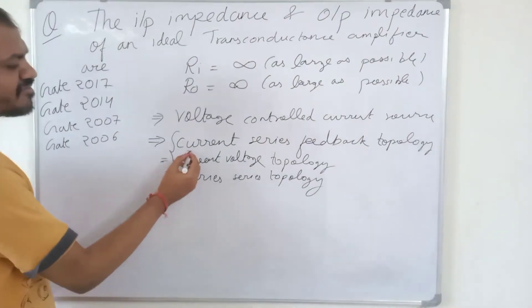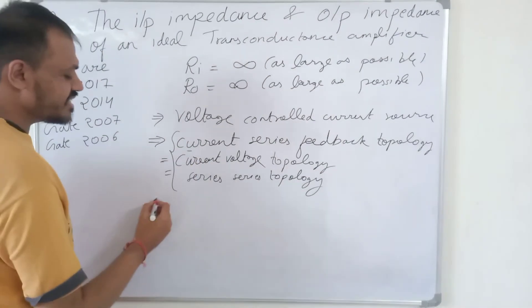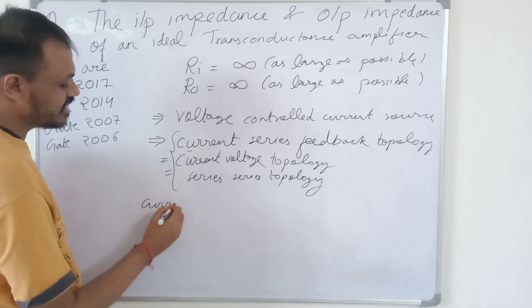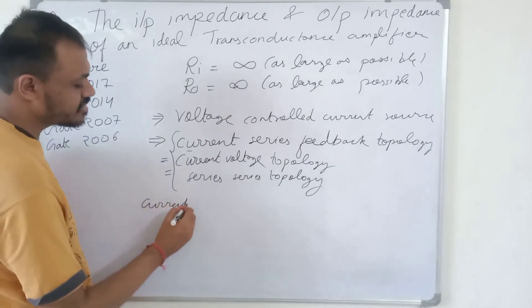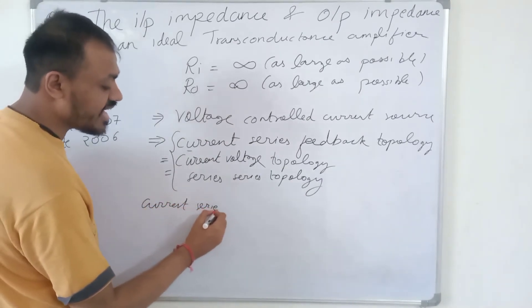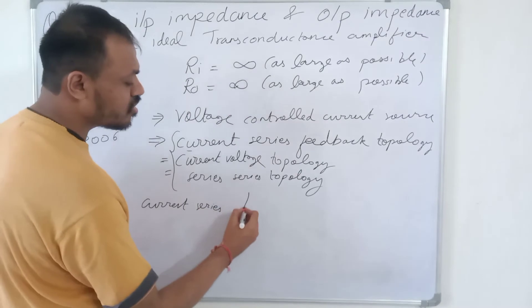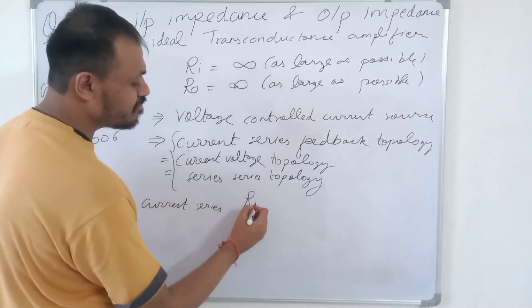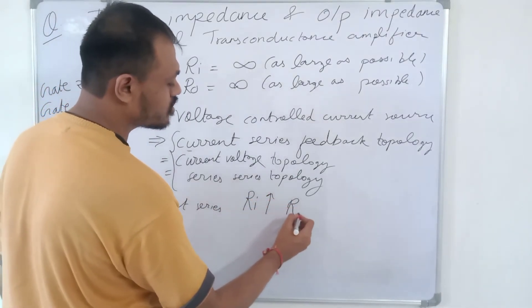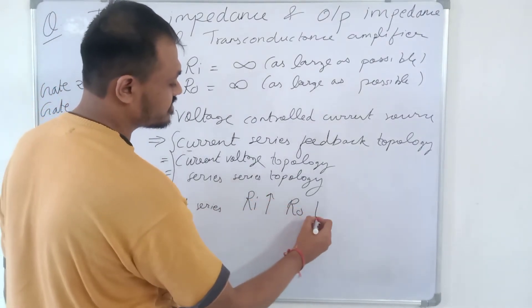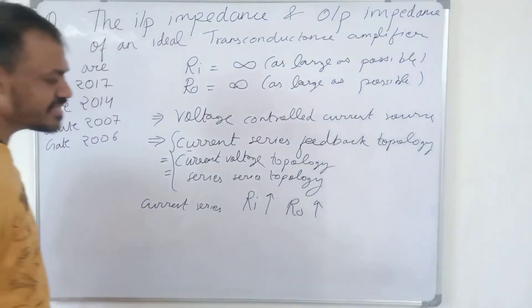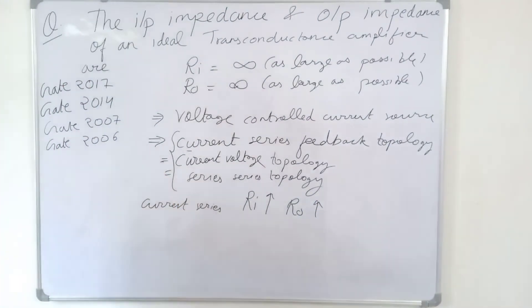When we use the Current Series topology, both input impedance Ri and output impedance Ro increase. This is the key property of the Current Series topology.